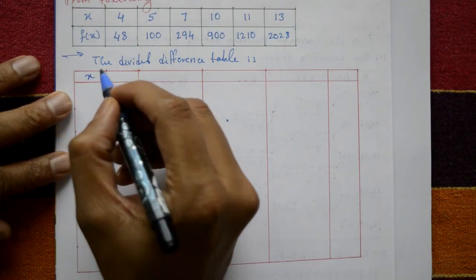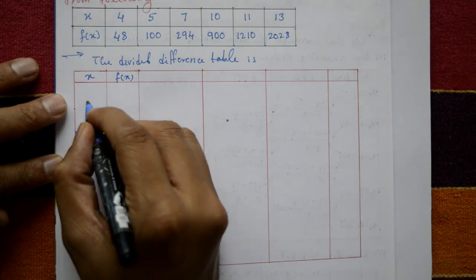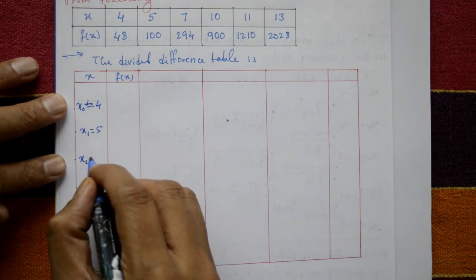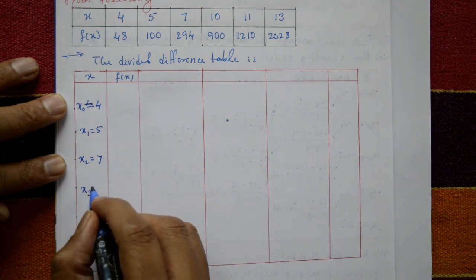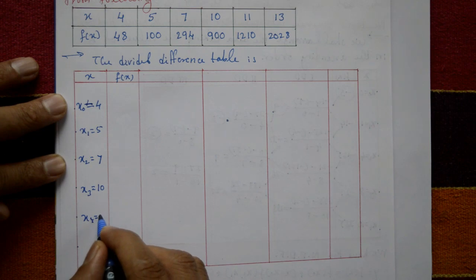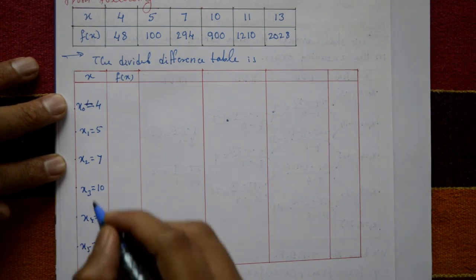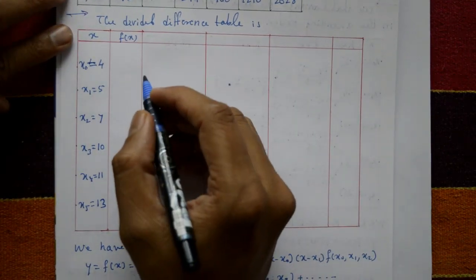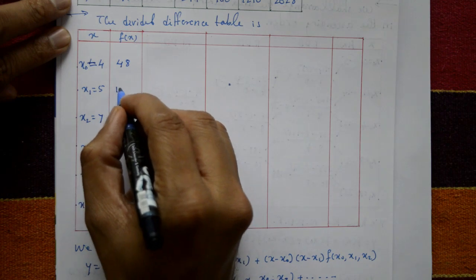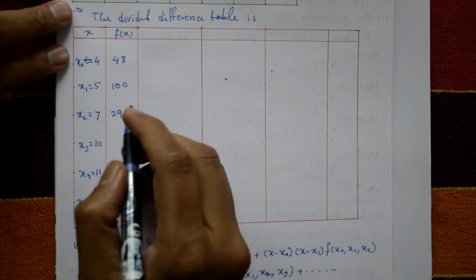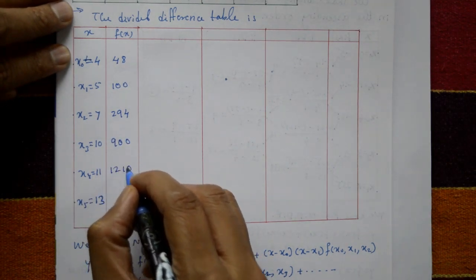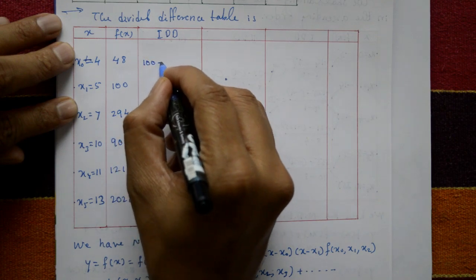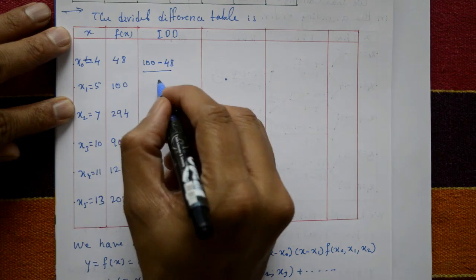The x values are: x₀ = 4, x₁ = 5, x₂ = 7, x₃ = 10, x₄ = 11, x₅ = 13. These are unequal intervals — not equidistant. The corresponding f(x) values are: 48, 100, 294, 900, 1210, 2028.